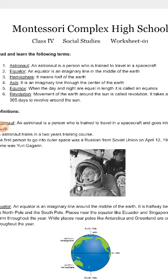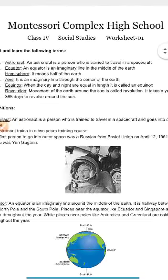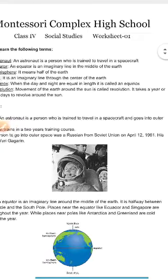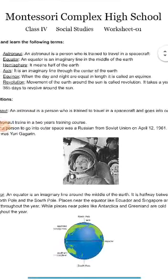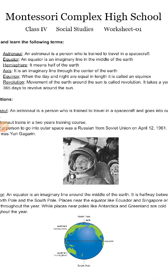The last term is revolution. Revolution is the movement of the earth around the sun. When the earth has moved fully around the sun, it is called revolution. It takes one year or 365 days, which are the total days of a year, to revolve around the sun. When the earth has revolved around the sun, a year is completed.